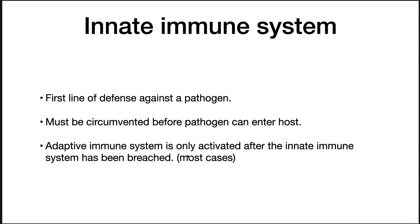The innate immune system is the first line of defense against a pathogen and must be circumvented before a pathogen can enter a host and cause harm. The adaptive immune system is only activated after the innate immune system has been breached in most cases. Previously, the innate immune system was thought to play only a small role, but recent findings reveal it plays a more significant role and can often thwart a pathogen all by itself.